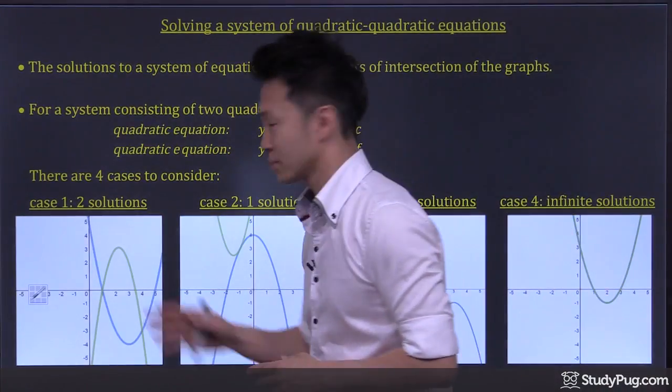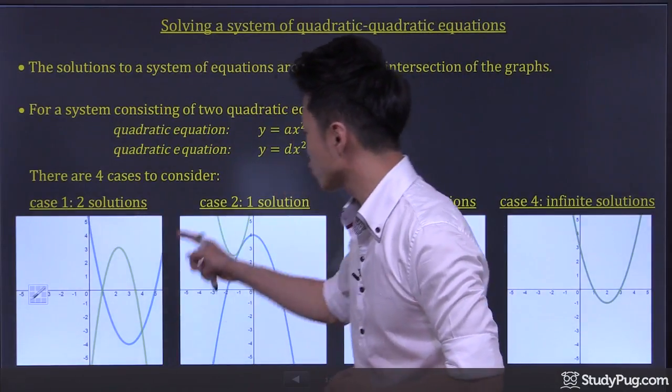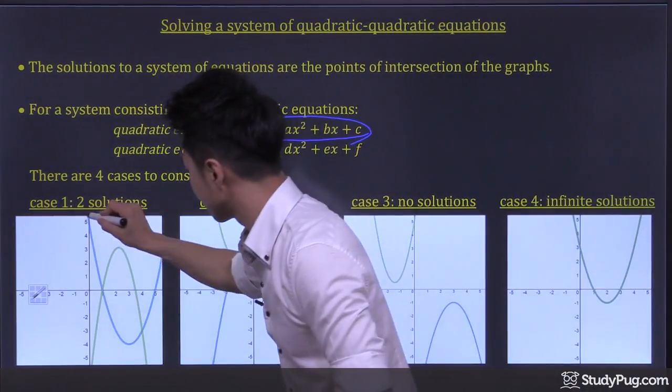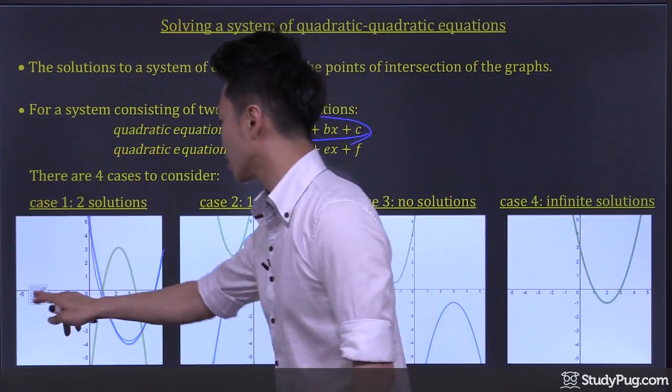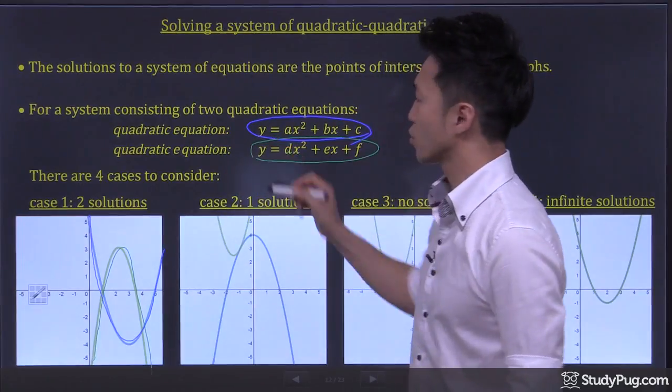Case number one: let's say the blue curve represents the first quadratic equation, and the green curve represents the second quadratic equation.